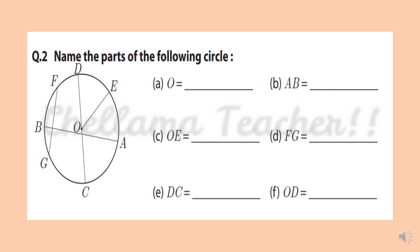Name the parts of the following in the given circle. Question A: O is the center. Question B: AB is the line segment which does not pass through the center of the circle, so it is a chord — it is not a diameter but it is a chord.